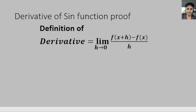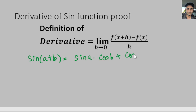Hello, welcome everyone. In this video I'm going to work on the proof of the derivative of the sine function using the definition of derivative. We need to know a couple of properties of trigonometric functions. One is sine of (a + b) equals sine of a times cosine of b plus cosine of a times sine of b.